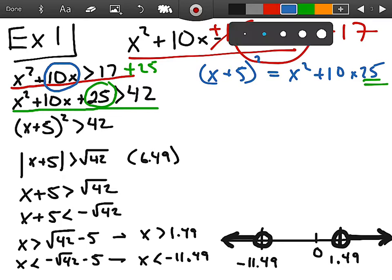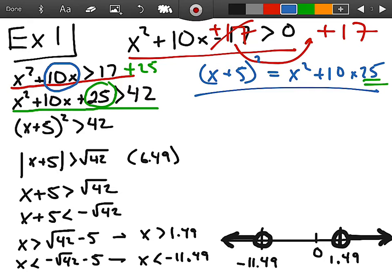From this blue over here, you know that the square of the x plus 5 binomial is now greater than 42. FYI, the square root of 42 is 6.49, just in case you're wondering. And when I move down from this line here, I need to take the absolute value of x plus 5.